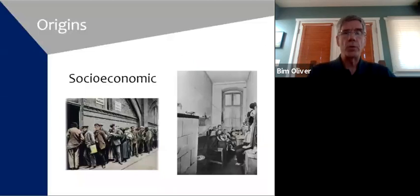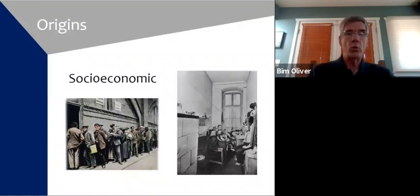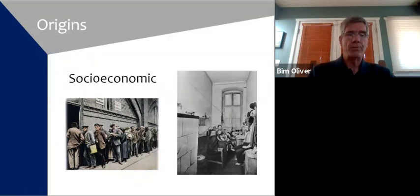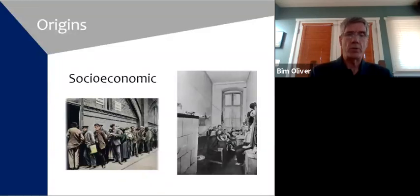And finally, there were socioeconomic influences. At the turn of the 20th century, Europe was on the verge of a collapse. We were on this march toward World War I, and there was significant socioeconomic disparity. There was tremendous depression in Europe, and a great sense of disenfranchisement. This group of architectural thinkers looked at these social conditions and felt that architecture could, among other things, serve to address these profound social issues.